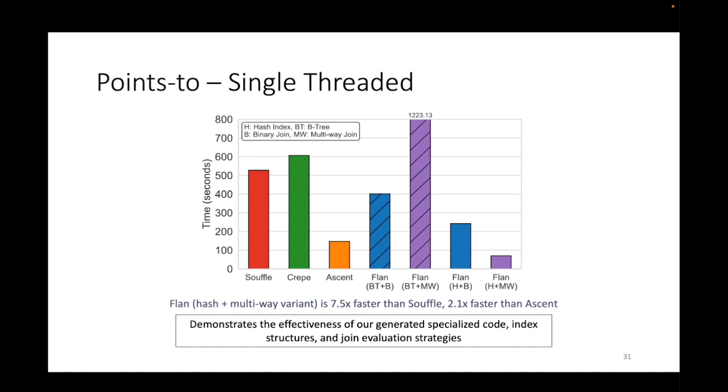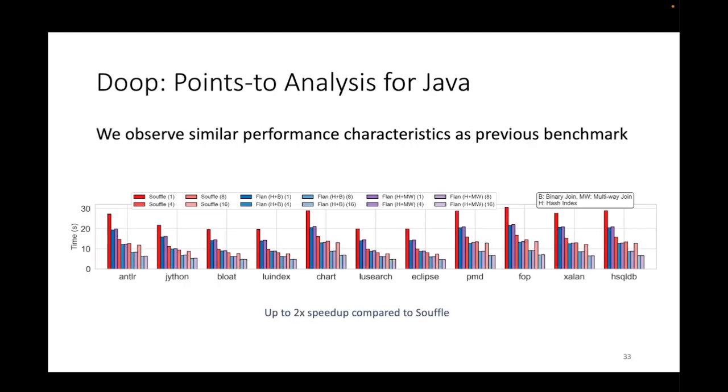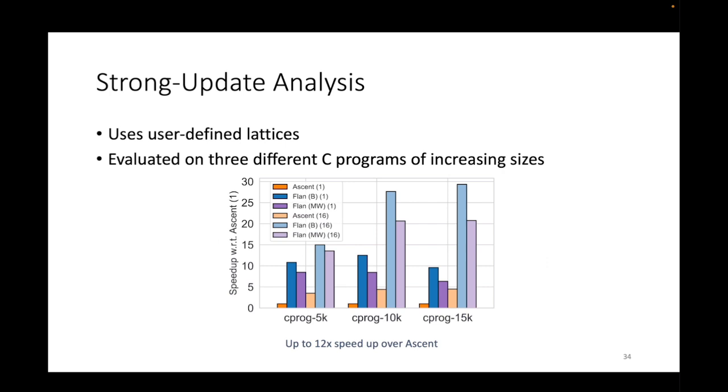For single-threaded, in our system we have different variants of index structures and join strategies. Again, this is possible because it's easy and there's faster turnaround time for different kinds of implementations. For this particular benchmark, our fastest performing variant is 7.5 times faster than Souffle and 2.1 times faster than Ascent. This demonstrated the effectiveness of our generated specialized code, index structures, and join evaluation strategies. Here we evaluate the parallel performance. Flan, our system, remains fastest in absolute terms across the number of threads. Since I'm running out of time I'll quickly go over this - this is for the strong update analysis. Again here we see that because our system is capable of pushing the specialized engine further, we see significant speedups compared to other systems.